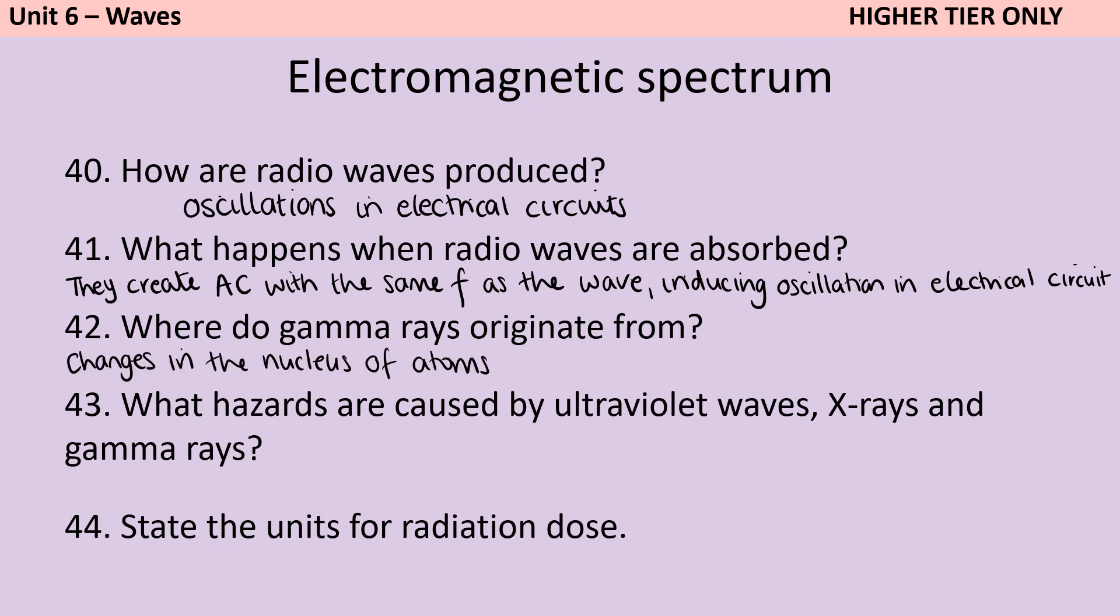Ultraviolet waves can cause your skin to age. So in other words, if you spend time on a sunbed, you're likely to end up looking a bit wrinkly and older, but also they massively increase your chance of getting skin cancer. Both x-rays and gamma rays can cause mutation to DNA. And this, of course, can also lead to all sorts of different kinds of cancer. Radiation dose is measured in sieverts.